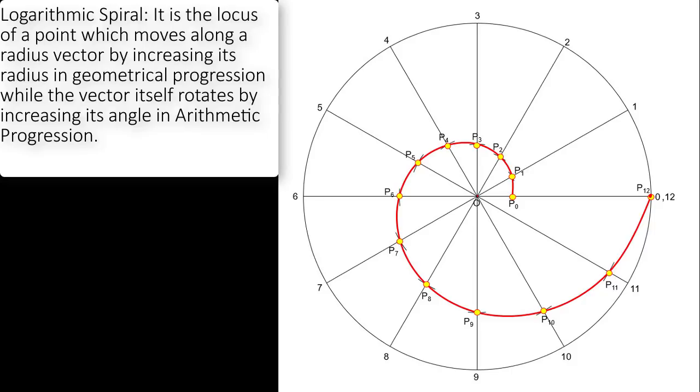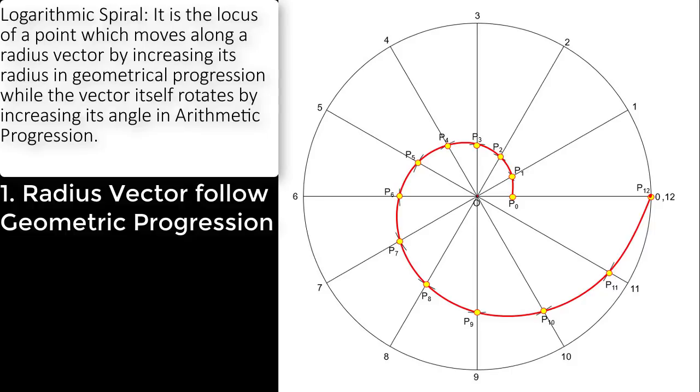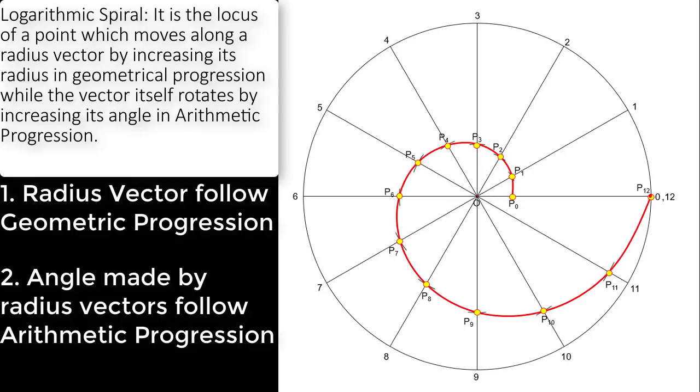To be very mathematical, in case of a logarithmic spiral, the radius vector increase following a geometric pattern and the vectorial angle will increase following an arithmetic progression. In the case of Archimedean spiral, both radius vector as well as vectorial angle increase following an arithmetic progression. So this is basically how you can differentiate these two curves.